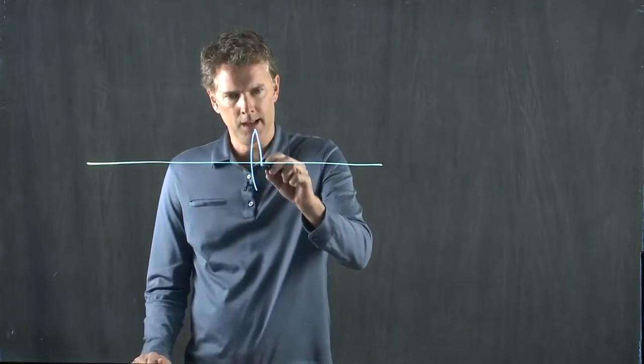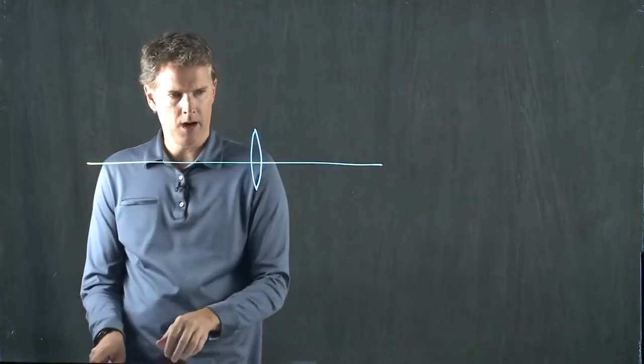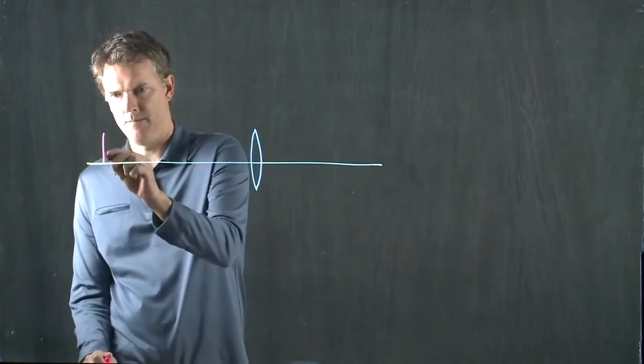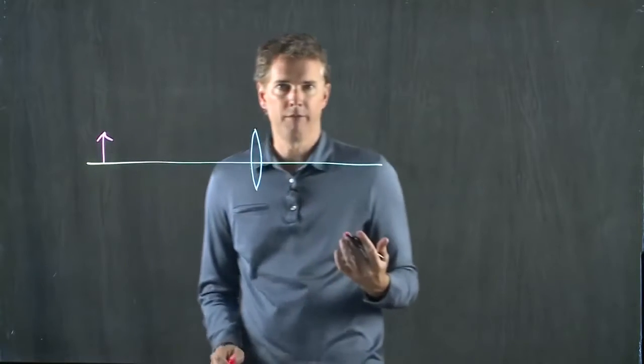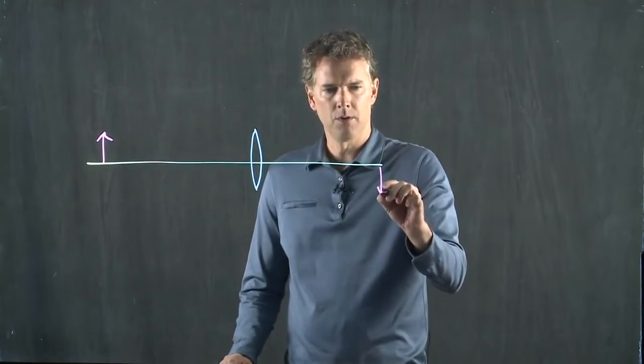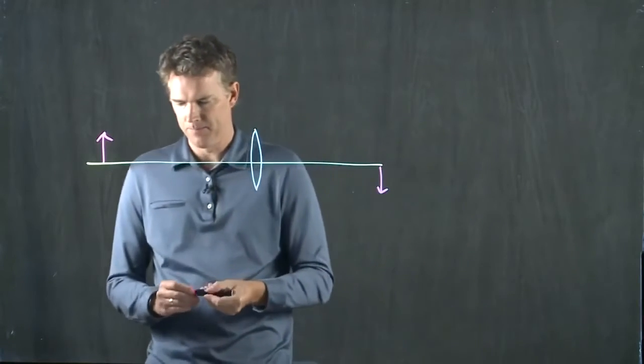We have a lens here. We'll put our object right here. And now we're going to form some image over here, just like we drew last time.